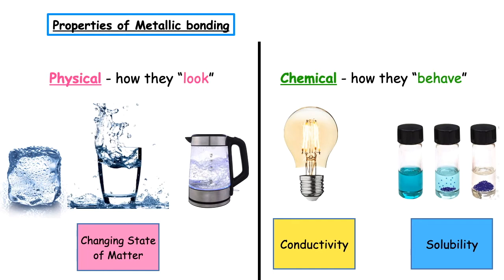We look at the physical properties of that compound. That's how they look and what we're focusing on is the state of matter that compound exists at room temperature. Is it a solid? Is it a liquid? Or is it a gas?